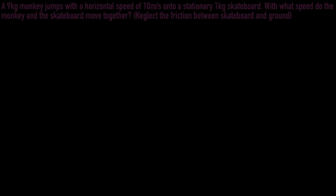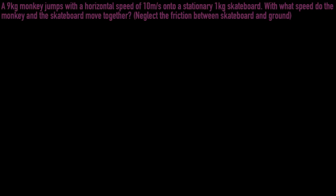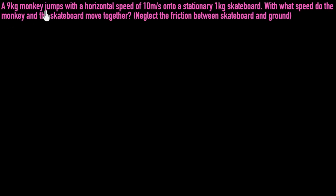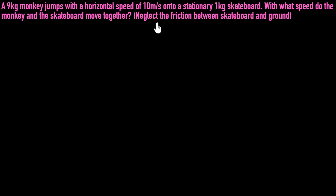Let's solve two problems on collision. Here's the first one. A 9 kg monkey jumps with a horizontal speed of 10 meters per second onto a stationary 1 kg skateboard. With what speed do the monkey and the skateboard move together? Neglect the friction between the skateboard and the ground.